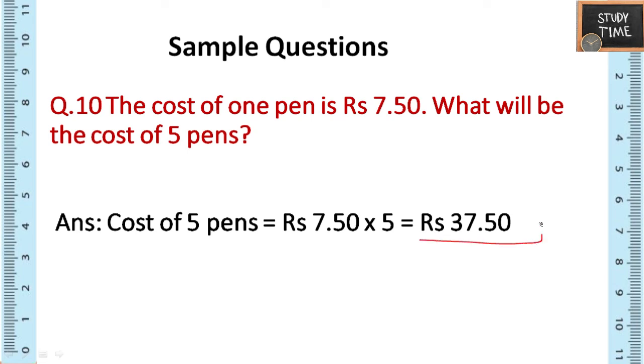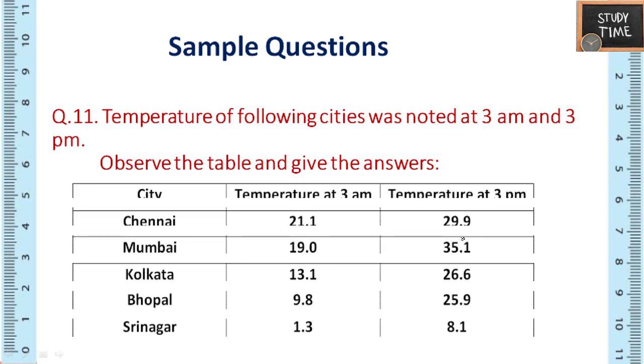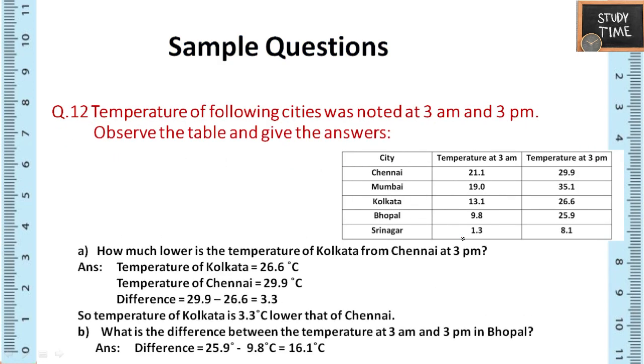Next 11th question: temperature of the following cities was noted at 3 a.m. and 3 p.m. Observe the table and give the answers. So this is the table. How much lower is the temperature of Kolkata from Chennai at 3 p.m.? So at 3 p.m., temperature of Kolkata, temperature of Chennai you have to write and then you have to subtract. Make sure you write the decimal point correctly.